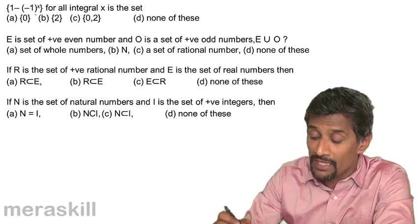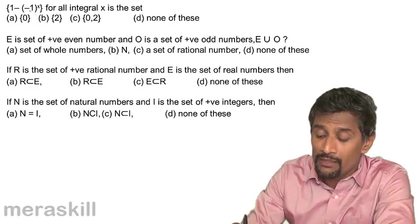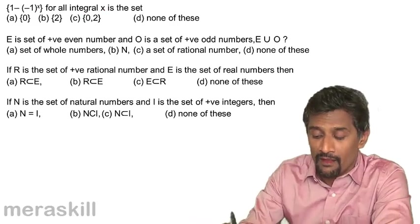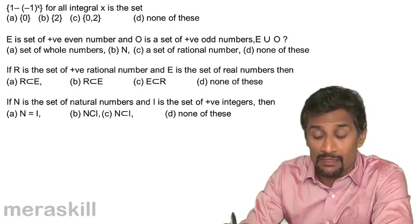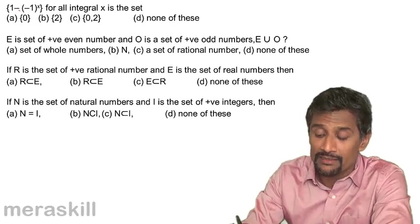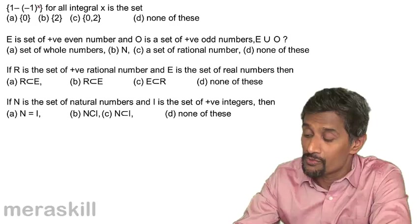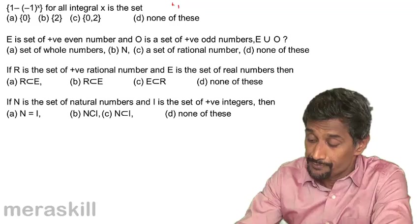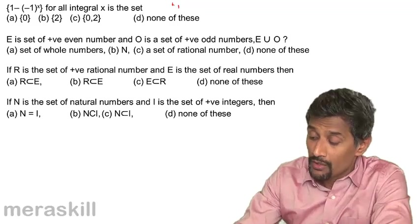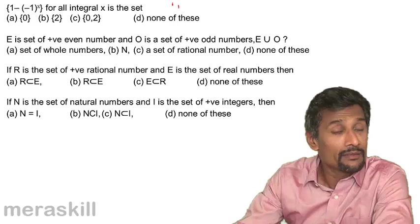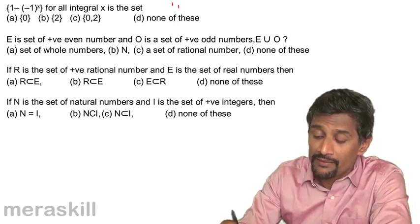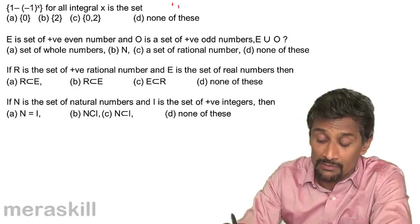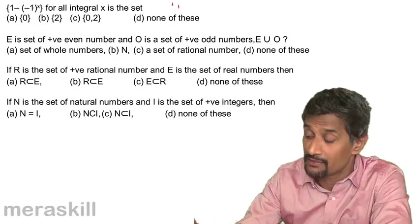Now let's explore these possibilities. {1 - (-1)^x} for all integral x is a set. Starting with various numbers, for example, if x is 0, it's like 1 - (-1)^0 which equals 1 - 1 = 0, right? Or suppose x is 1. For odd numbers, (-1) raised to an odd number is negative, so it's 1 - (-1) = 1 + 1 = 2.